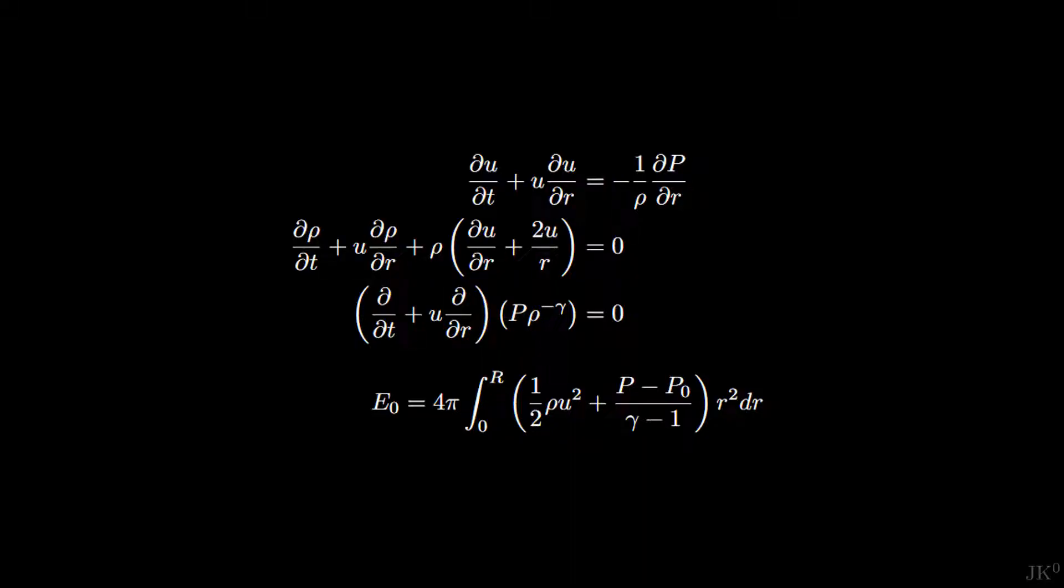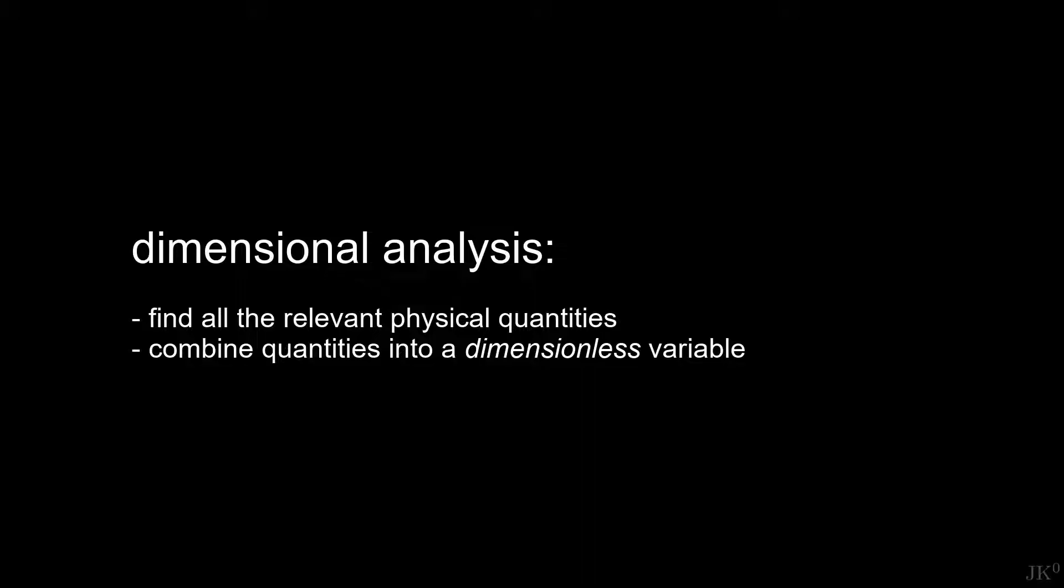Here we can make use of a very important technique in physics called dimensional analysis. In a simple form, the idea is the following. You collect all the relevant quantities and combine them to create a variable that has no units. This is equivalent to writing one quantity in terms of all the others so that all the dimensions match. Let's do this explicitly for the size of the blast wave.